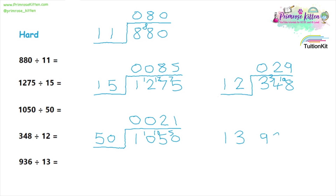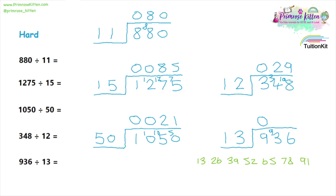936 divided by thirteen. How many thirteens will go into nine? That is zero, so we carry the nine over. How many thirteens will go into ninety-three? We can count up: thirteen, twenty-six, thirty-nine, fifty-two, sixty-five, seventy-eight, ninety-one. So we can see that seven will go in, and we carry the two. Then: how many thirteens go into twenty-six? Two.